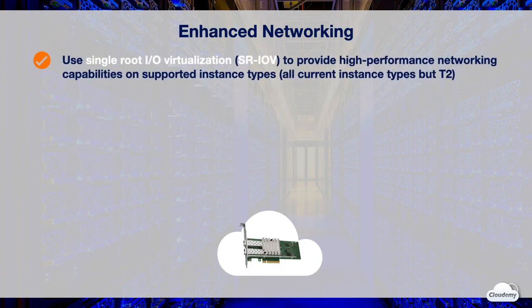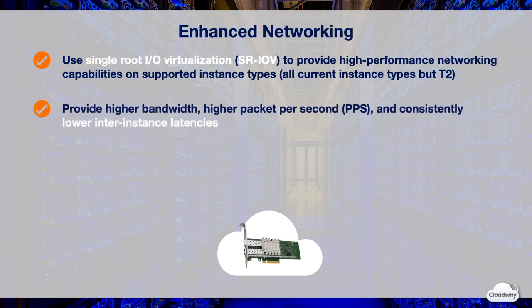Enhanced Networking is an advanced networking feature that you can configure for your EC2 instance. It uses single-root I/O virtualization to provide high-performance networking. All current-generation instance types except for T2 instances support enhanced networking. Enhanced Networking provides higher bandwidth, higher packet-per-second, and consistently lower inter-instance latencies.